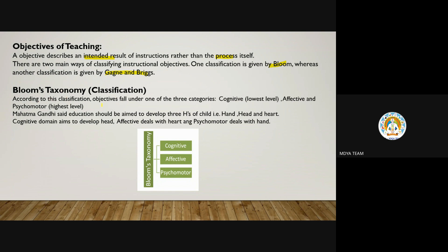According to Bloom's classification, objectives fall under one of three categories. All the objectives a teacher sets for learners will come under three categories: cognitive, affective, and psychomotor. Cognitive is the lowest level and psychomotor is the highest level.